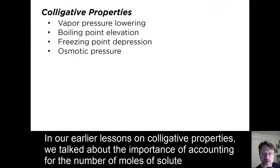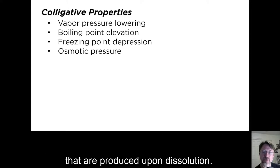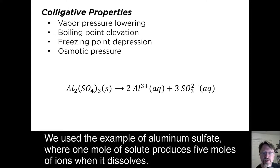In our earlier lessons on colligative properties, we talked about the importance of accounting for the number of moles of solute that are produced upon dissolution. We used the example of aluminum sulfate, where one mole of solute produces five moles of ions when it dissolves.